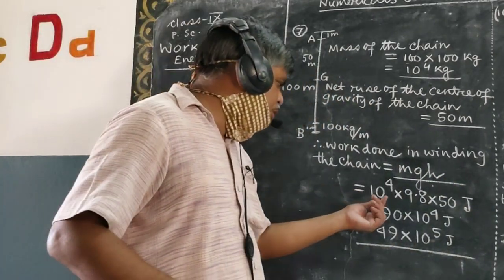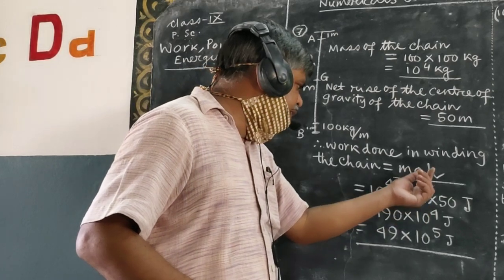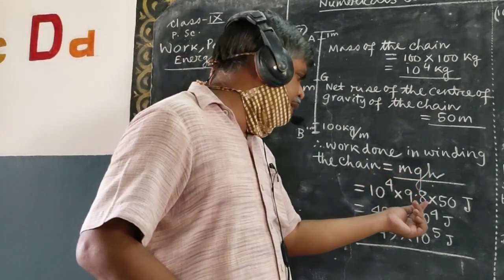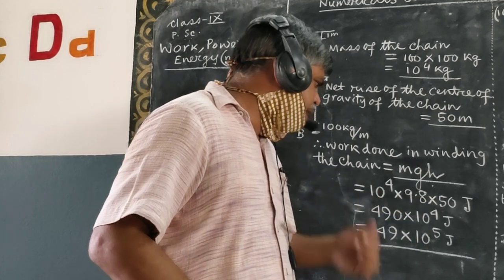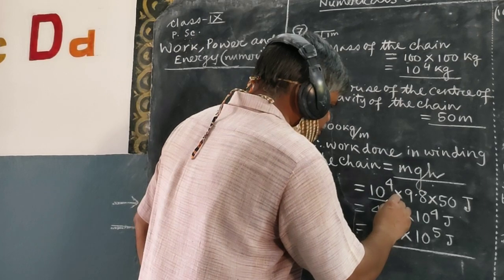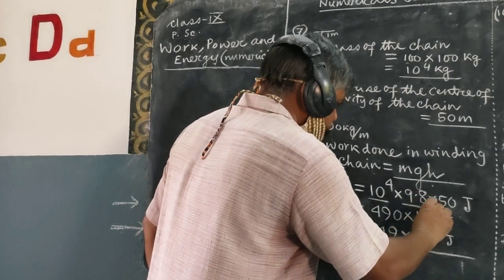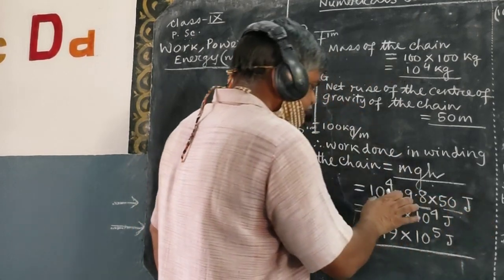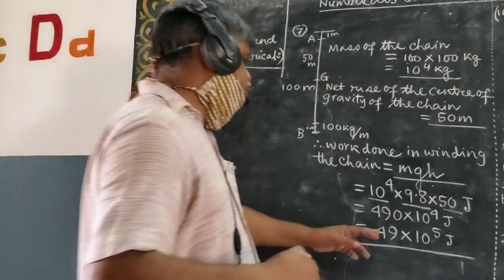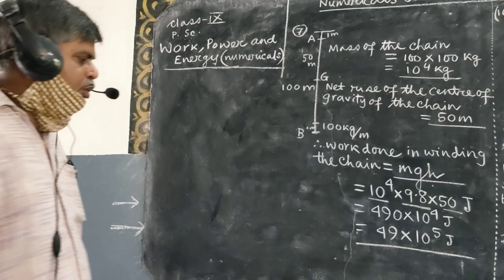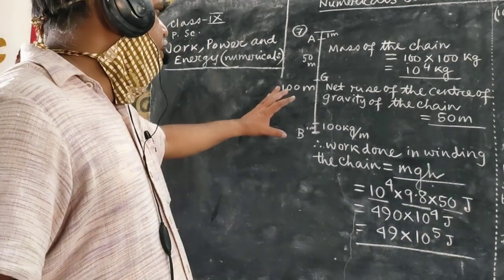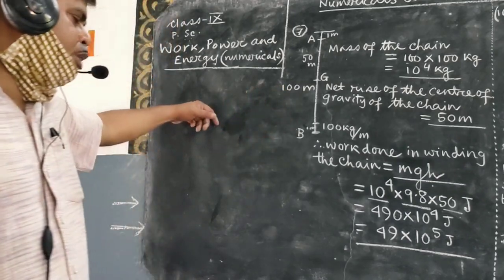So we can write that the work done in winding the chain is equal to mgh. That is equal to 10 to the power of 4 into 9.8 — where g is the acceleration due to gravity — into 50. This will be in Joules, because kilogram into meter per second squared into meter gives Newton into meter which is Joule. So the total amount of work done is 49 into 10 to the power of 5 Joules. That is how we solve this type of problem.